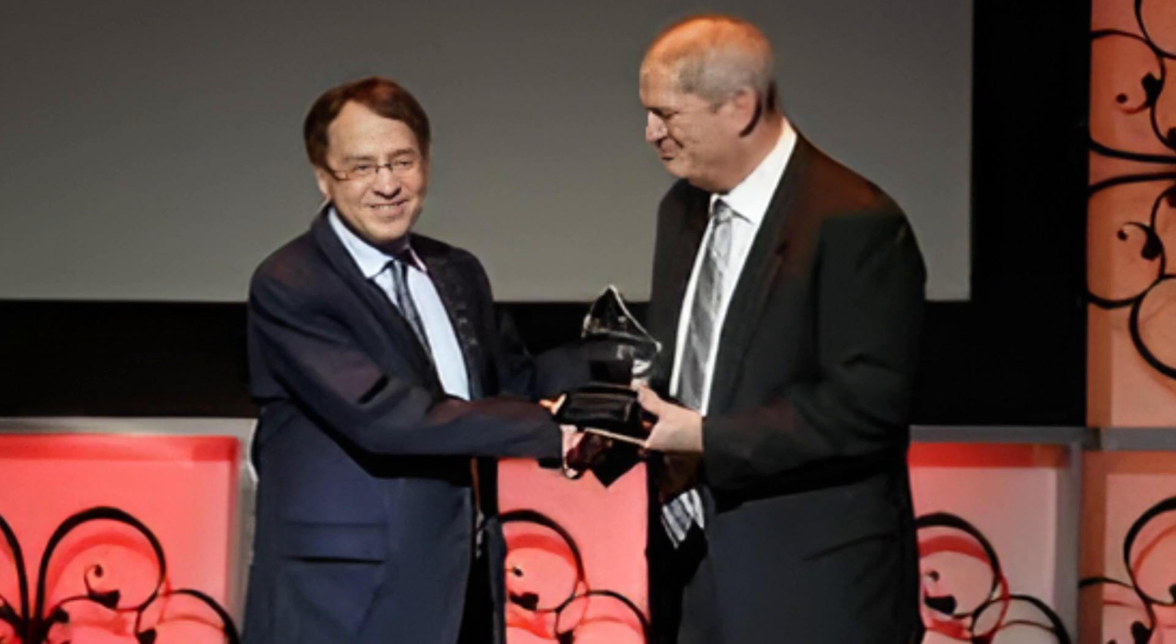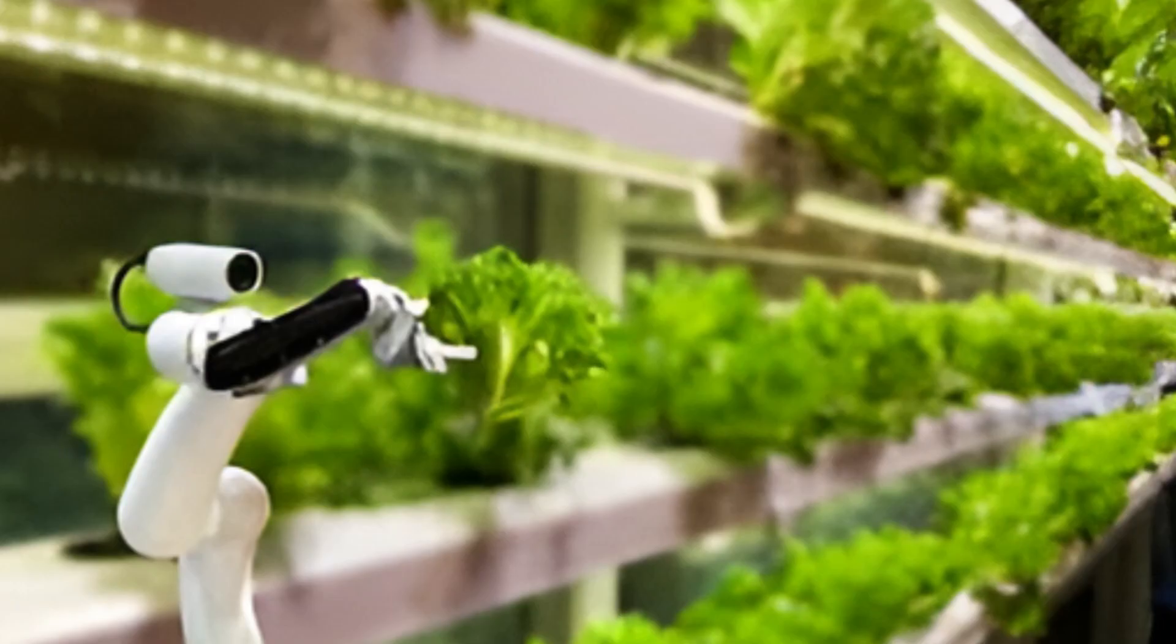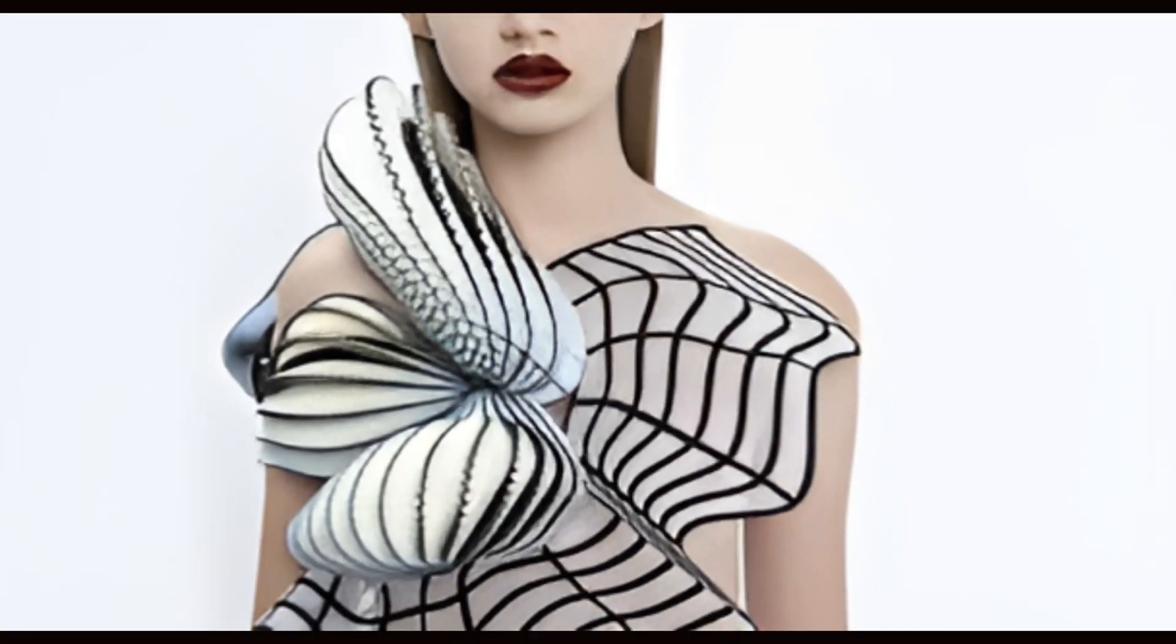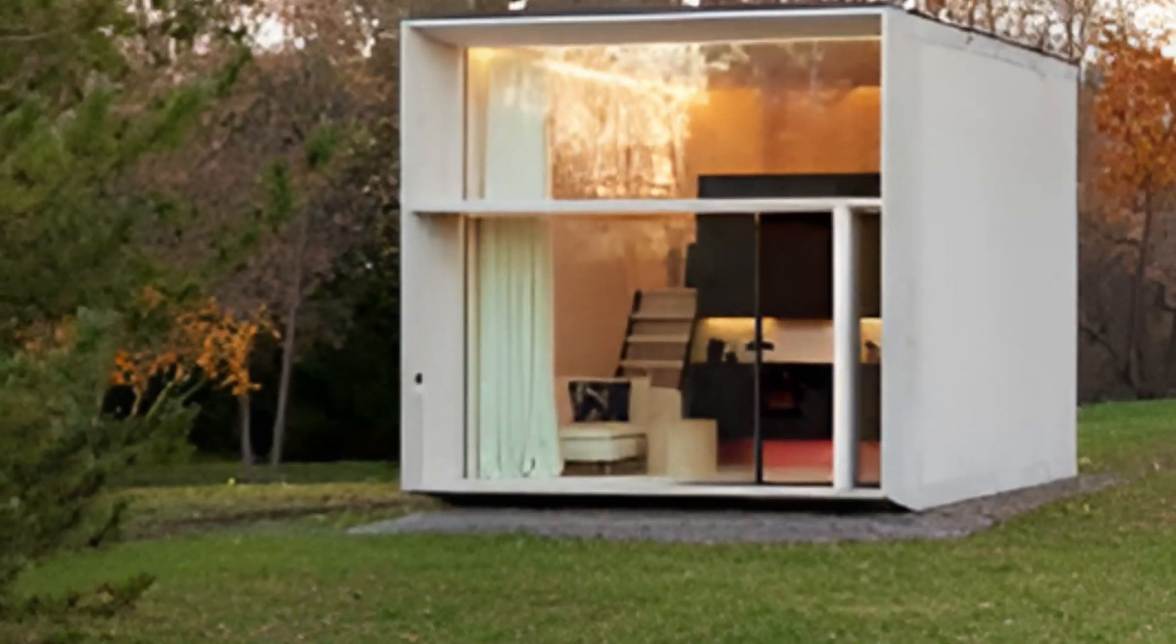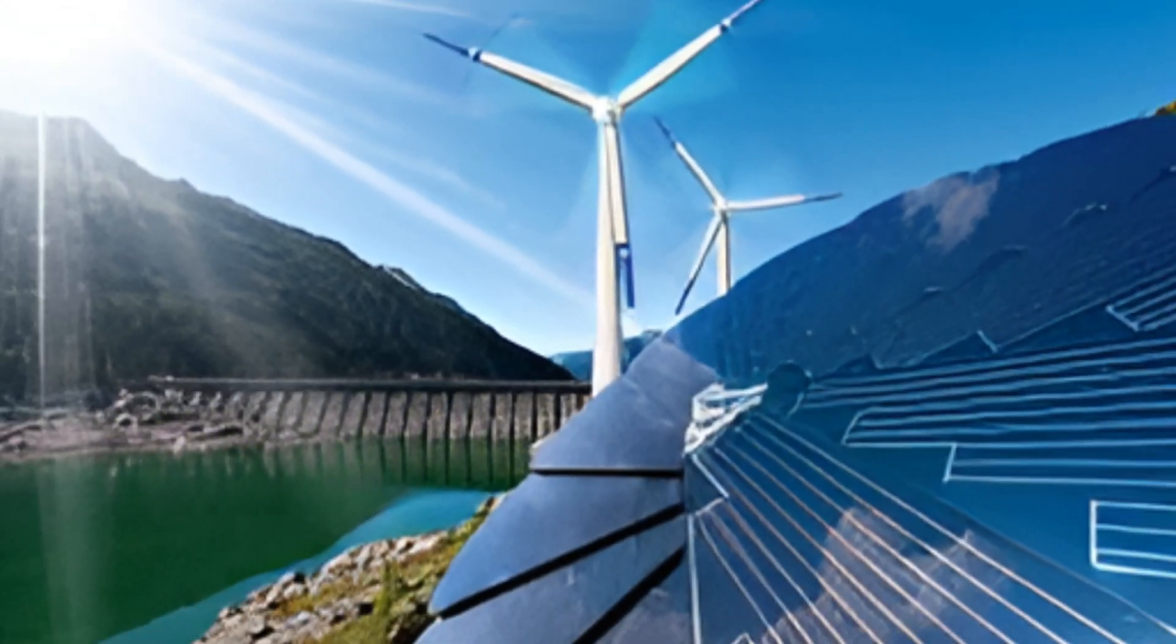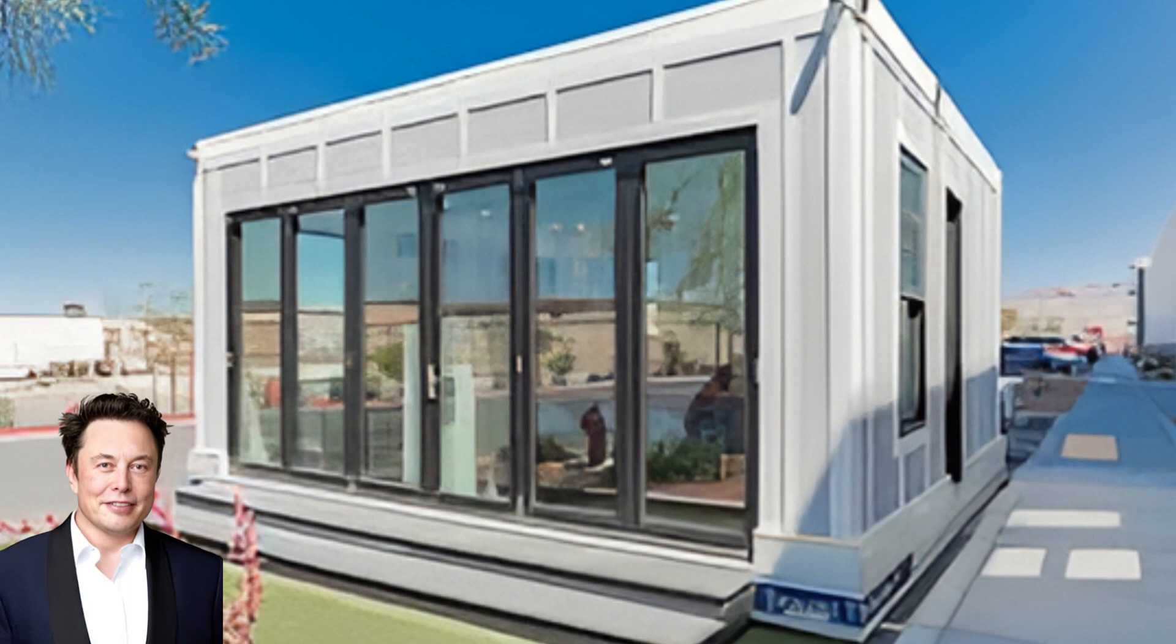Kurzweil predicts a future of abundance with innovations like vertical farms, 3D-printed clothes, quick assembly homes, and cheap renewable energy. Elon Musk already lives in a rapidly built, $50,000 factory-made home.